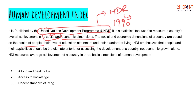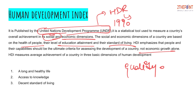The social and economic dimensions of a country are based on the health of people, their level of education attainment, and standard of living. These days, indexes being developed are more concerned about the quality of life rather than the quantitative figure of GDP. They are not just focused on economic growth but equally emphasizing the quality of life that people of a country maintain.